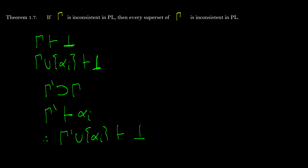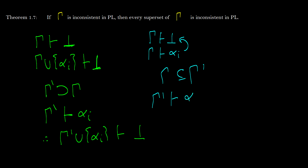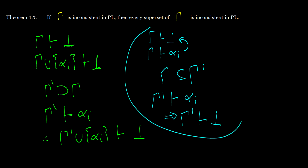Sometimes these proofs seem a little too simple, but this is exactly what it is — pretty straightforward. We say gamma is inconsistent, gamma proves alpha i, which is the thing that makes it inconsistent. Well, gamma is part of this bigger set gamma prime. Therefore, gamma prime is also going to prove alpha i, and therefore gamma prime is going to be inconsistent. This is the proof — probably one of the easiest ones, because it's fairly intuitive.